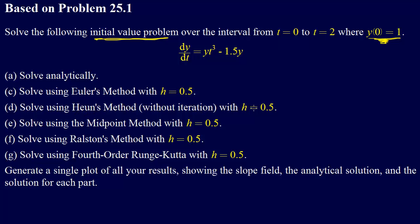Solve using Heun's method without iteration, and we're going to use h equals 0.5 on all these. We're going to use the midpoint method, Ralston's method, and then go to fourth order Runge-Kutta method.